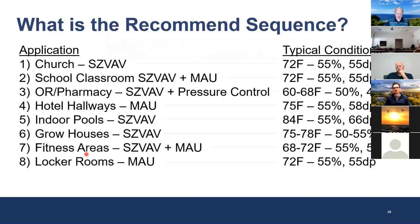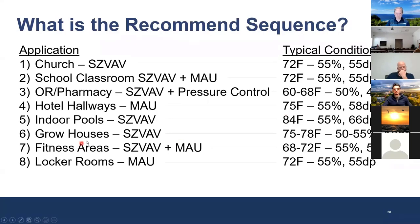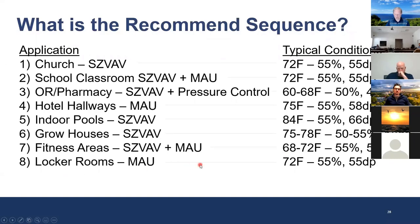Finally, what is the recommended sequence? We have churches, classrooms, hotel hallways — 75°F at a 58°F dew point, basically telling guests 'go to your room' where they have independent control. Indoor pools at a 66°F dew point. Grow houses range from 75–78°F at 50–55% RH. Fitness areas: single zone VAV, heavy load when occupied and no load when unoccupied, plus makeup air component — a spin room generating tremendous CO2, targeting 68–72°F at 55% RH with lower dew points for comfort. Locker rooms: makeup air unit, 72°F at 55% RH, 55°F dew point.